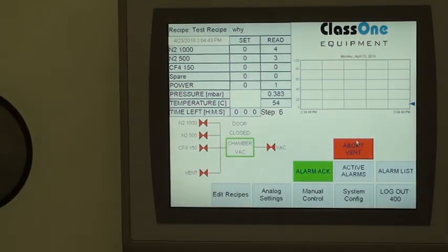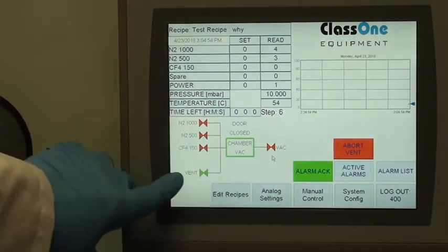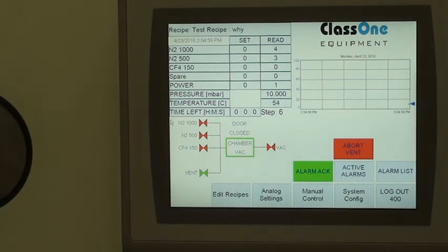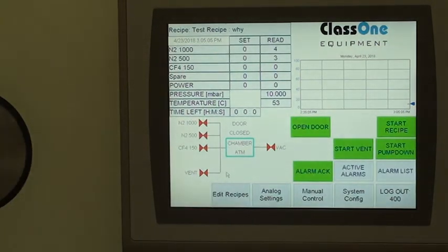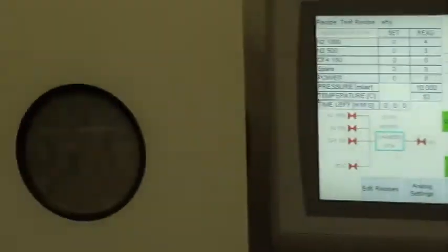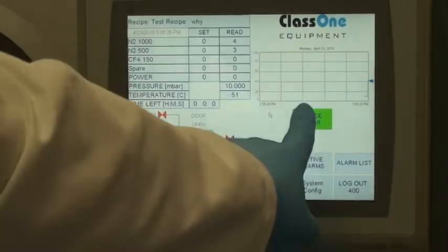I can vent the chamber. You can see here we're under vacuum. There's your vacuum valve, your vent valve. These are your three MFCs for your gases. Vent's complete. Acknowledge. I can open the door. The door is open. And go back, got to close the door.